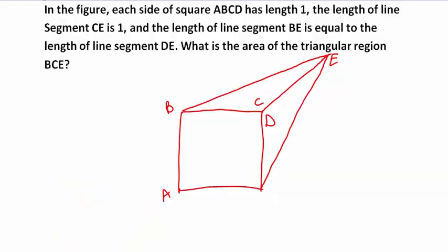This is a very important and difficult question of geometry. In the figure, each side of square ABCD has length 1 — so we have 1, 1, 1, and 1. The length of line segment CE is equal to 1, so this segment is equal to 1.